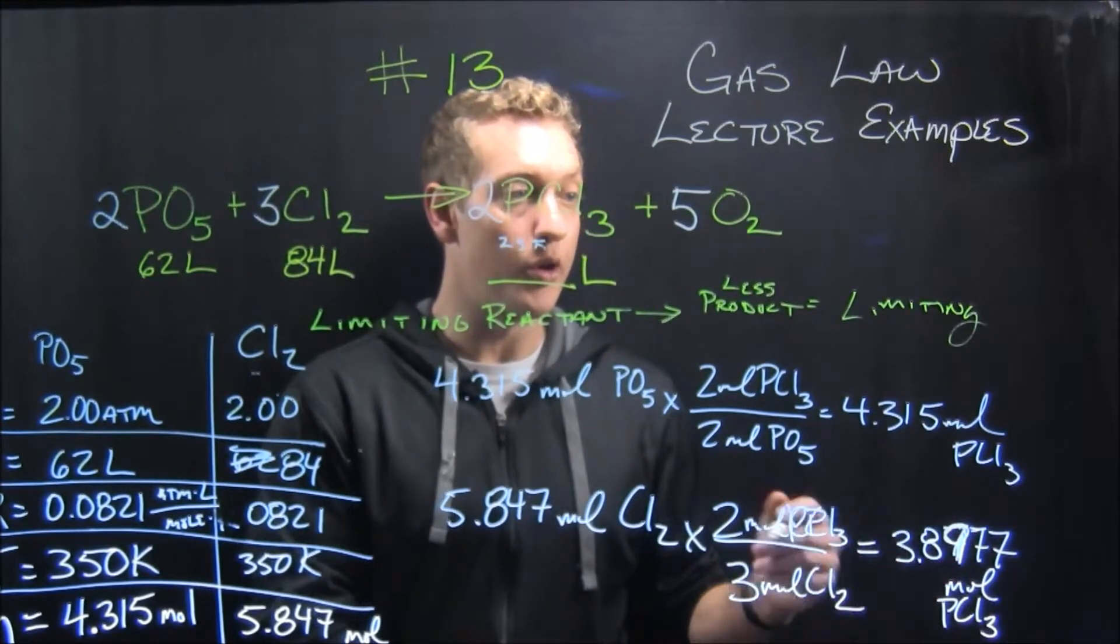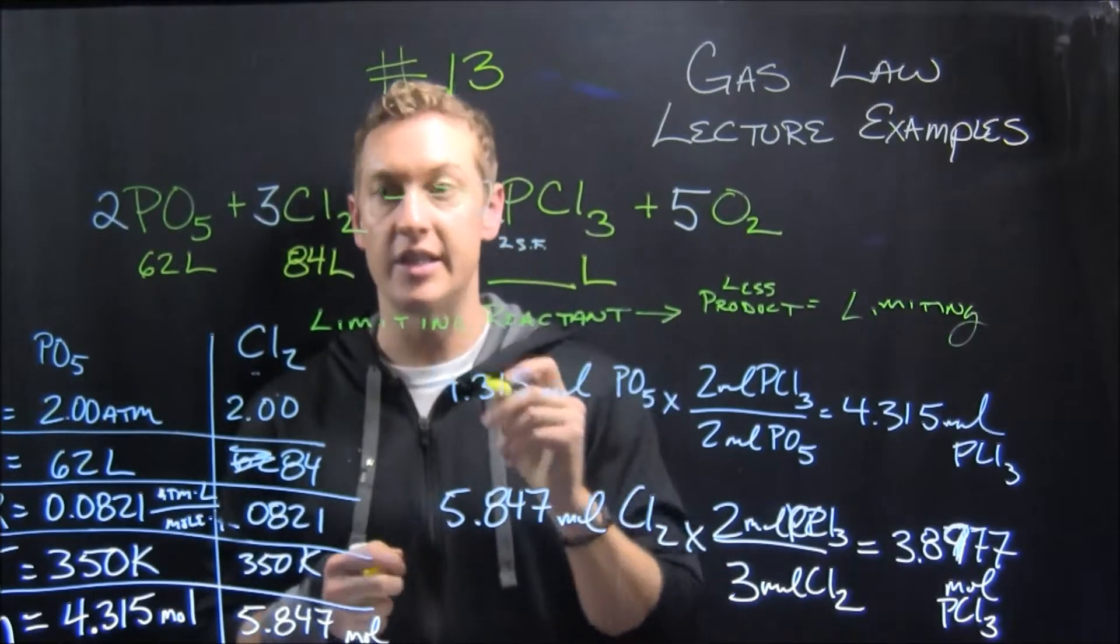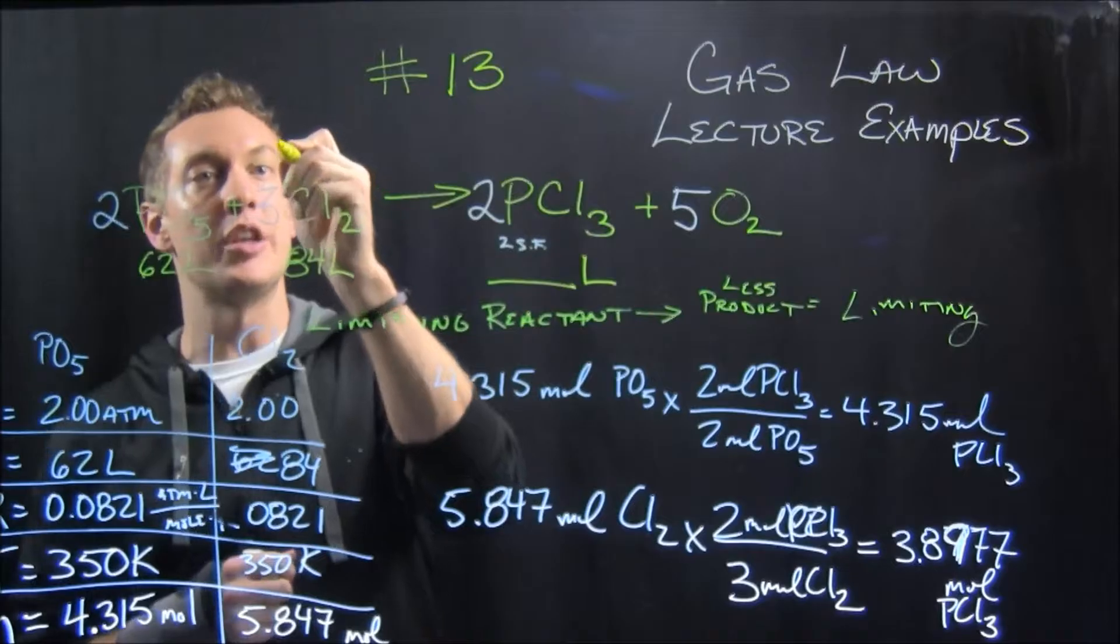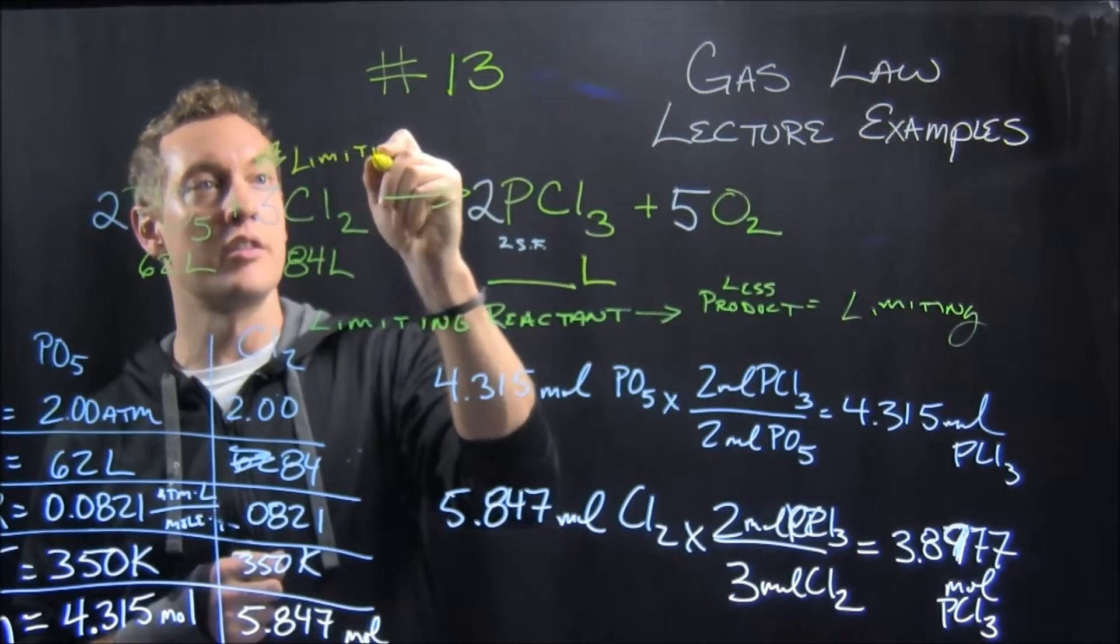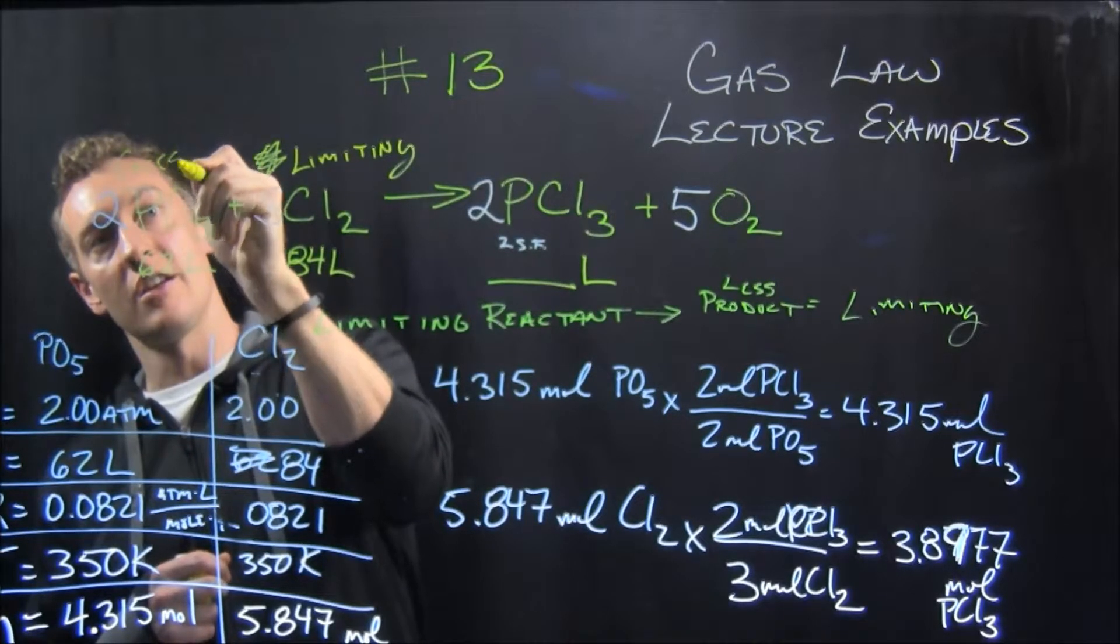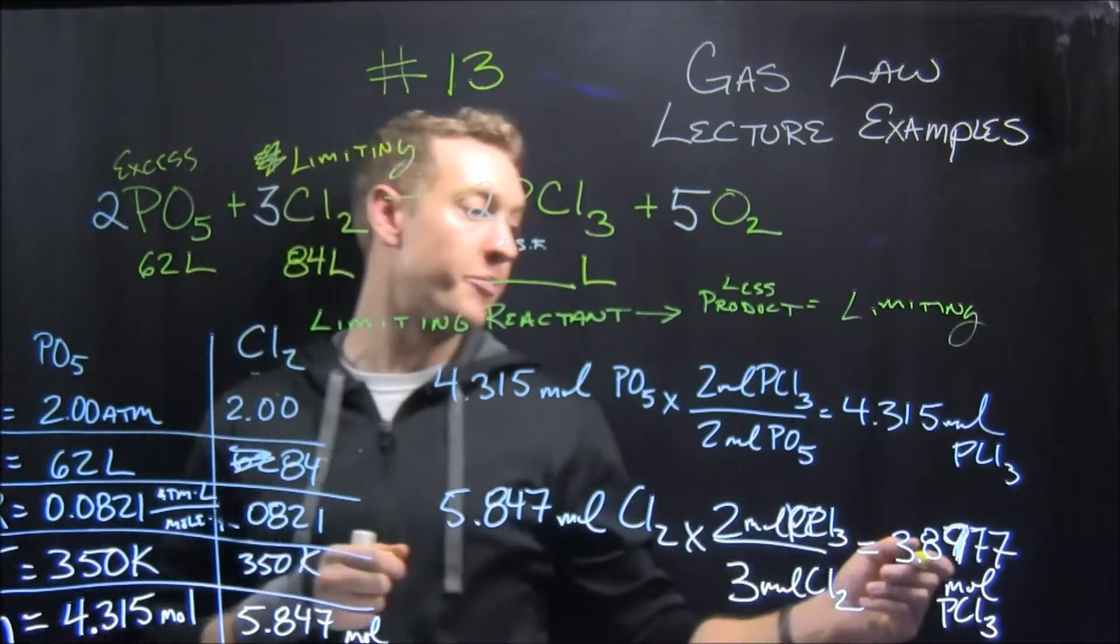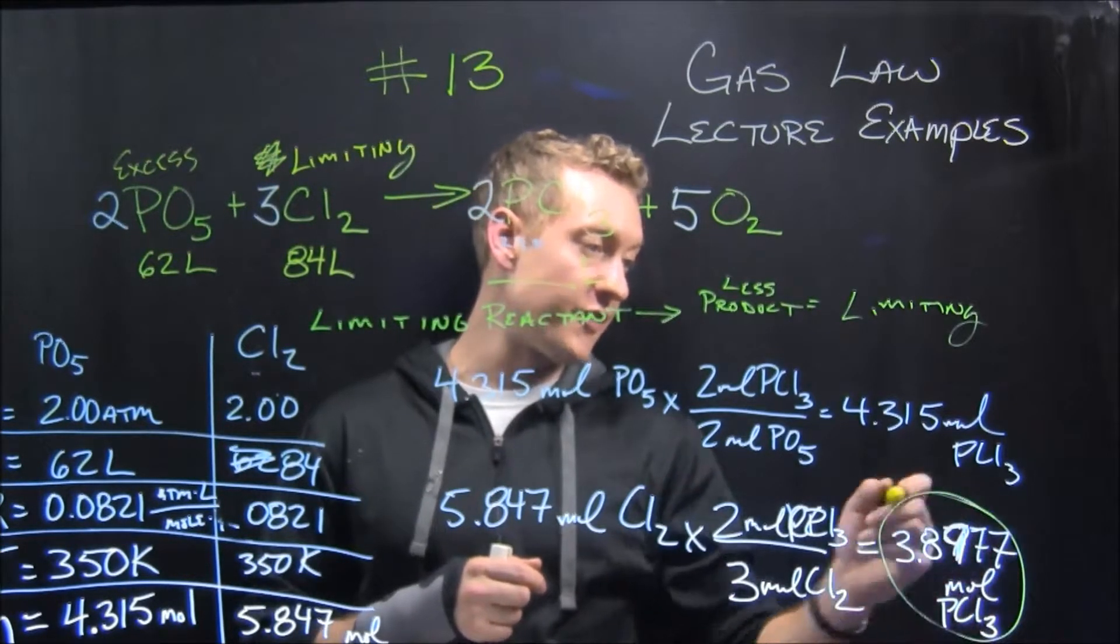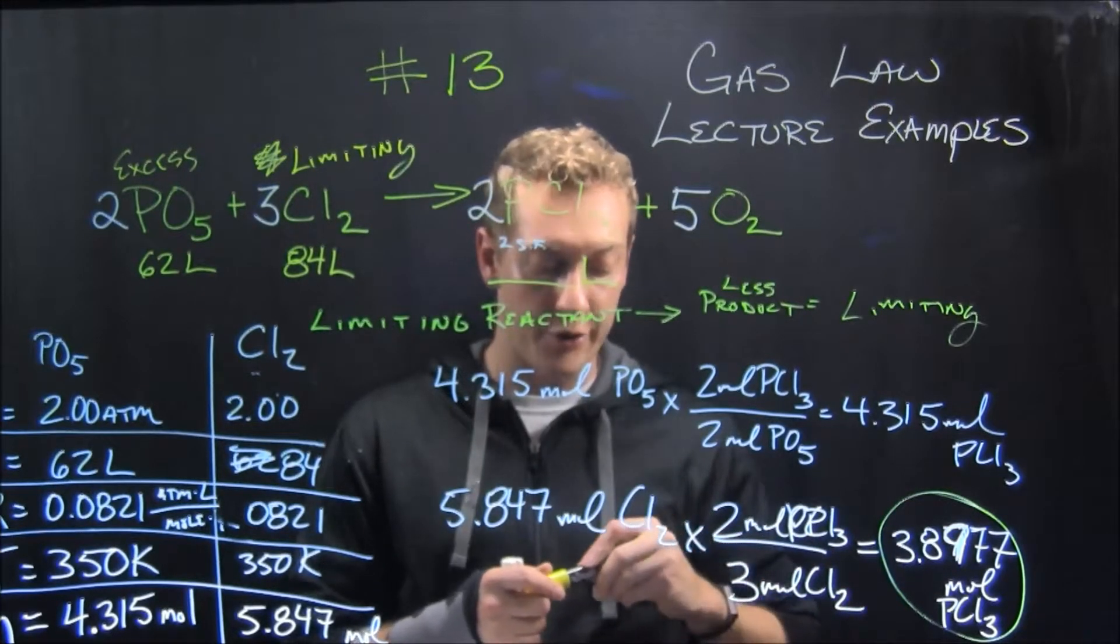Since that is the lower amount of product, that means that CL2 is my limiting reactant for, come on, Vicks. That's my limiting reactant, and PO5 is the excess reactant. So the amount of moles of PCL3 I'm going to make is this value right here, 3.8977 moles of PCL3. Now,